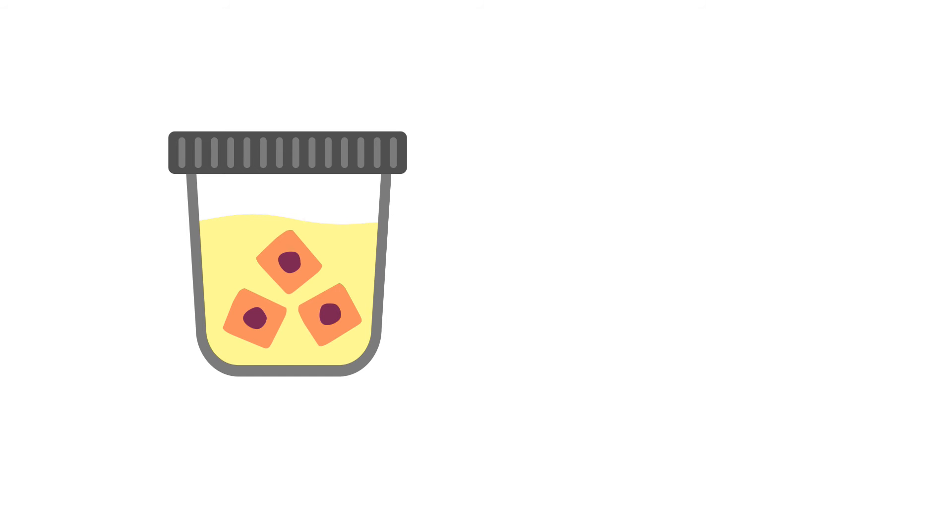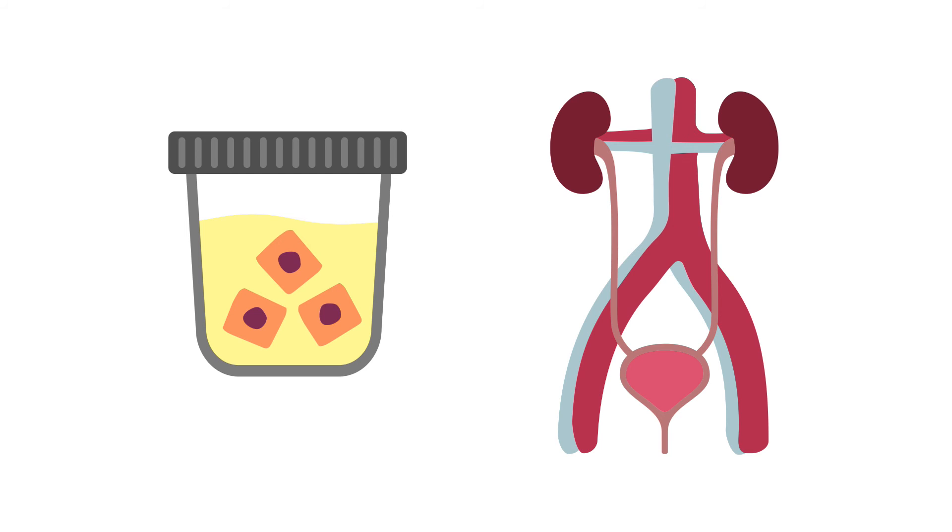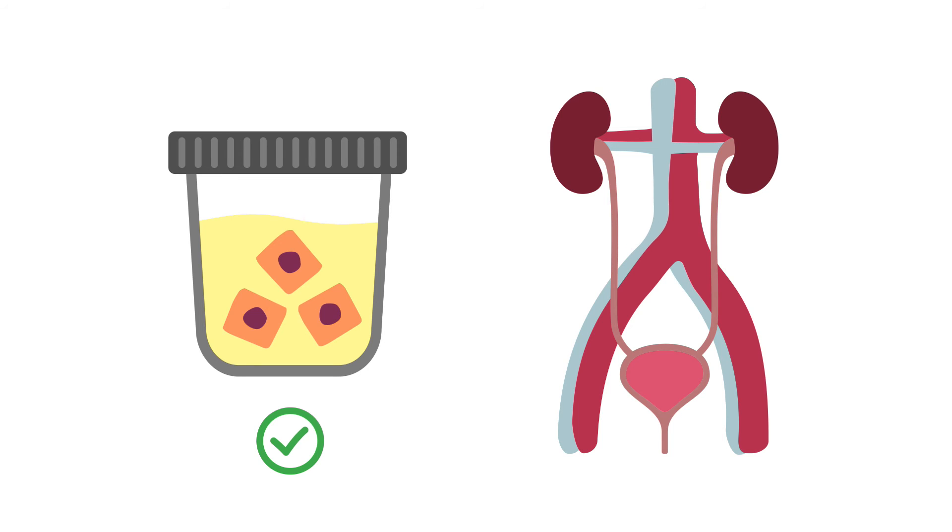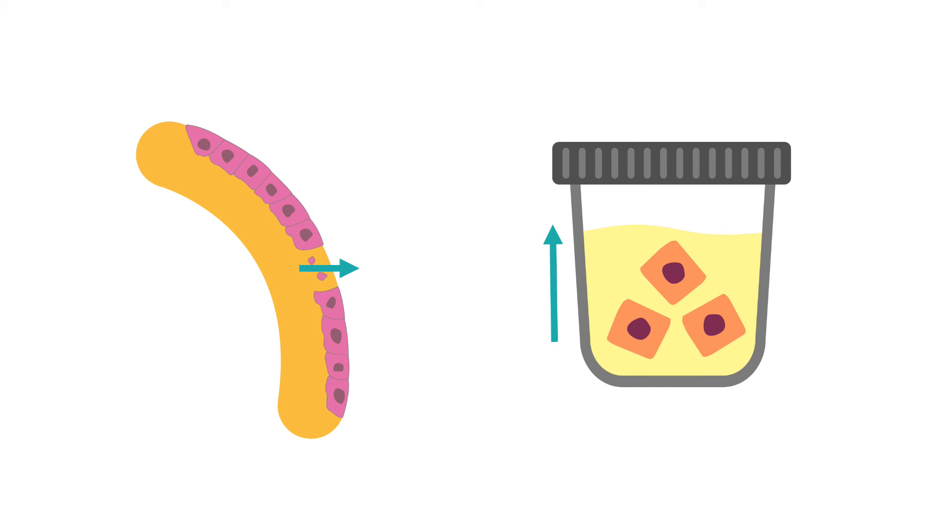Epithelial cells may appear in the urine after being shed from anywhere within the genitourinary tract. Thus epithelial cells are often a normal finding in the urine. In some conditions such as those associated with tubular damage, you may see increased numbers of epithelial cells in the urine.